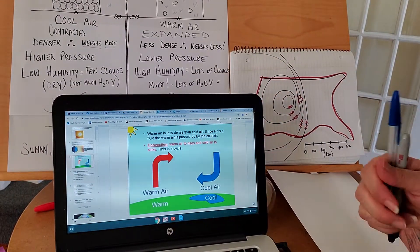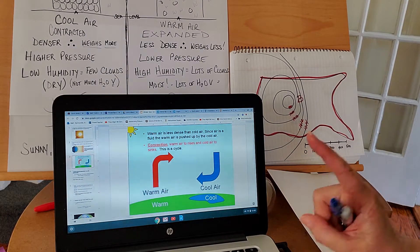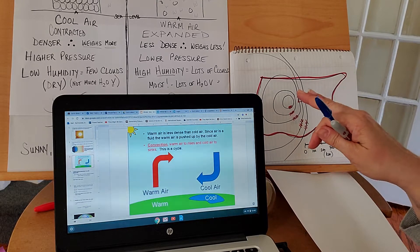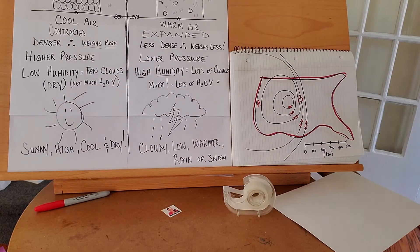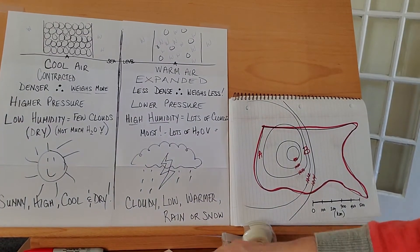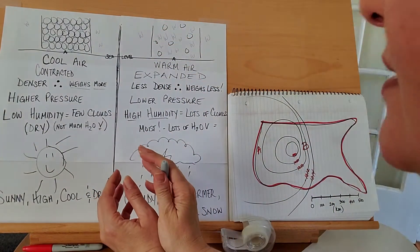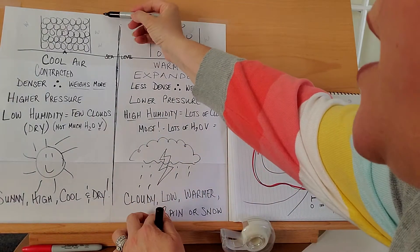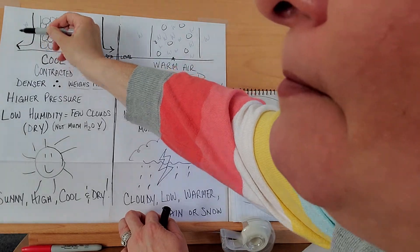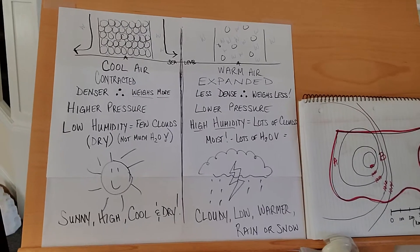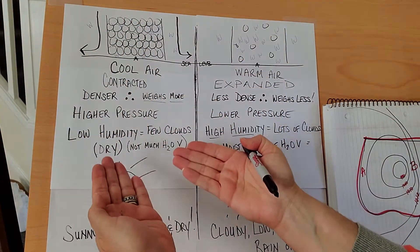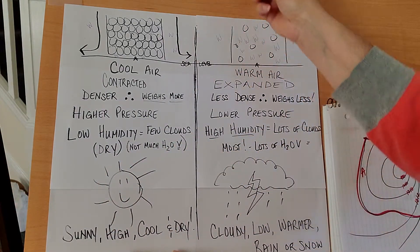Warm air is less dense than cold air. Since air is a fluid — not a liquid, but it behaves similarly — warm air is pushed up by cold air, and cold air sinks. If I show you this diagram, here is cold air. Cold air is contracted, that makes it denser, that makes it weigh more. Picture the air being cool — it will drop, and when it hits the ground, it has no place to go but spread out like this. Cool air drops, it can't help it — it's contracted, it's falling, it's exerting high pressure. When it hits the ground, it spreads out.